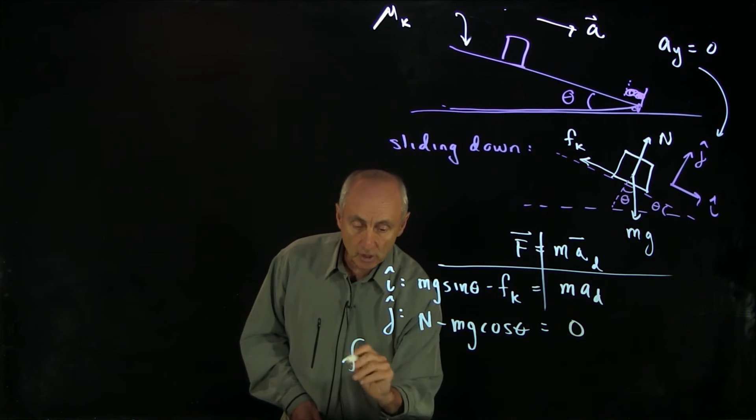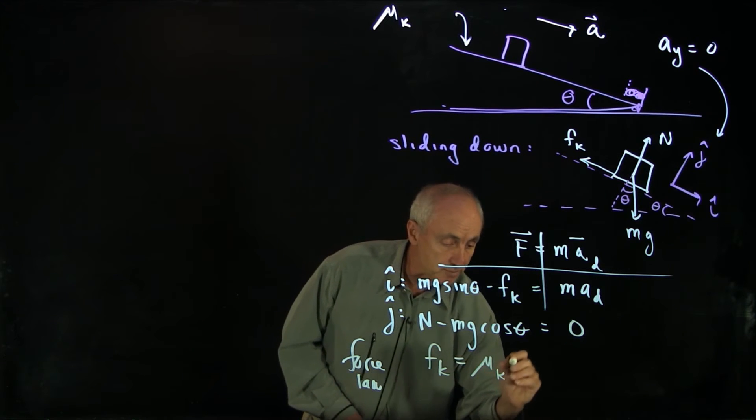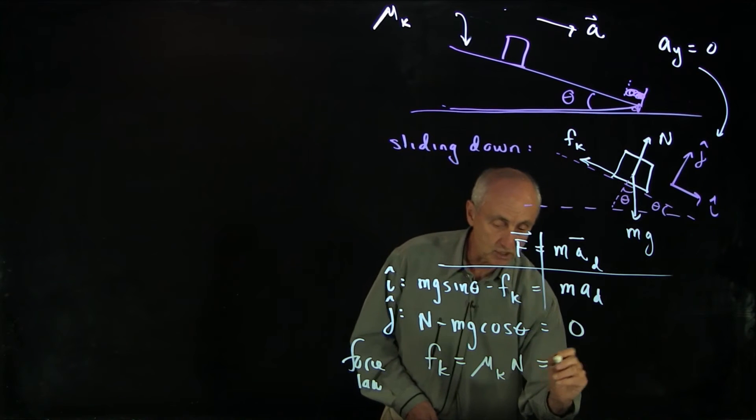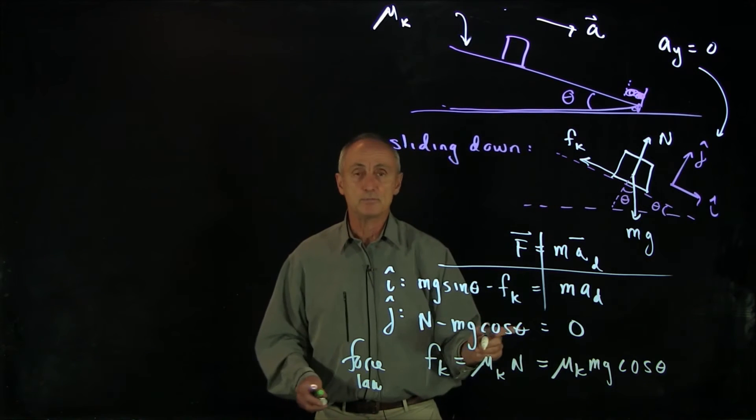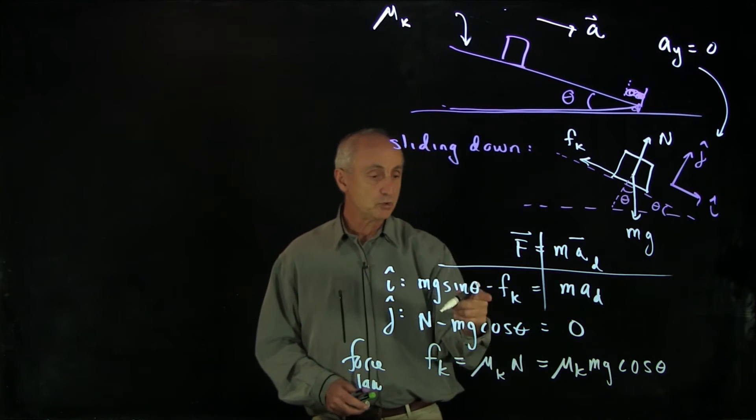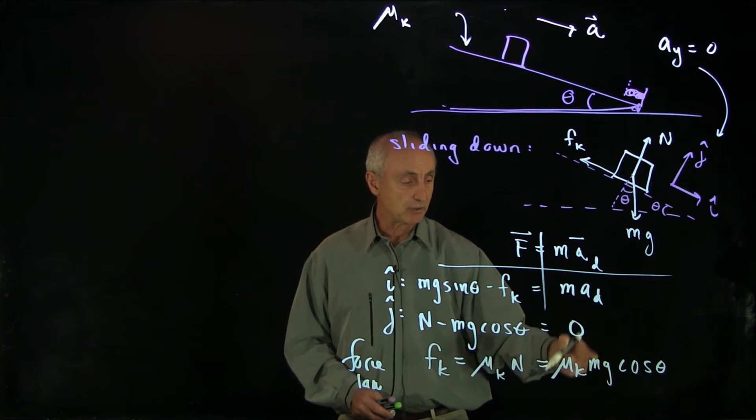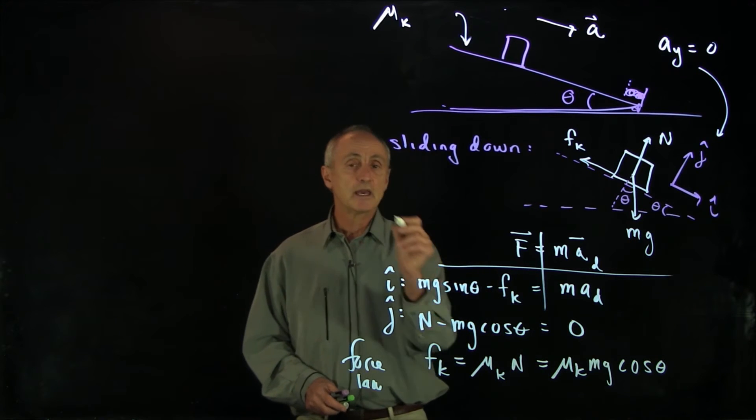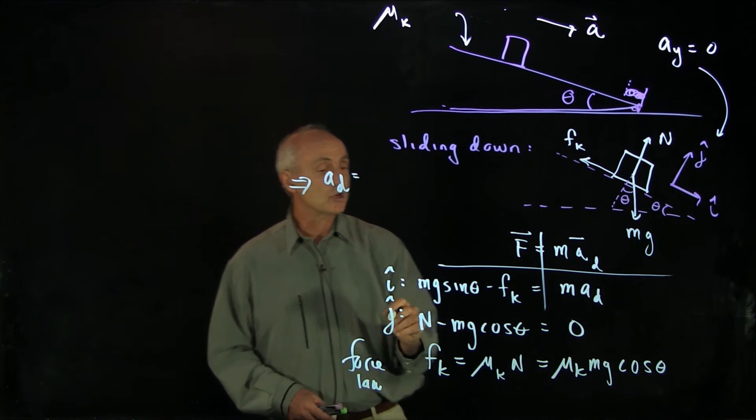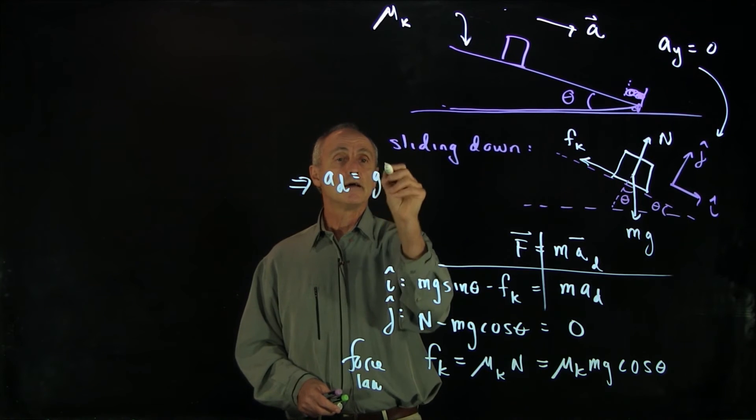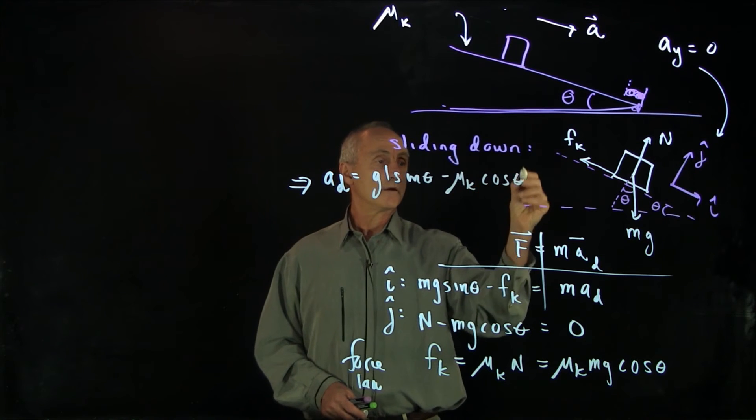But now I have a force law for my friction, which is that the kinetic friction is equal to a coefficient mu k times n. And I can see from this equation that's mu k mg cosine theta. And now I'm in position to substitute my friction into this equation and solve for the acceleration. Notice the mass will cancel.